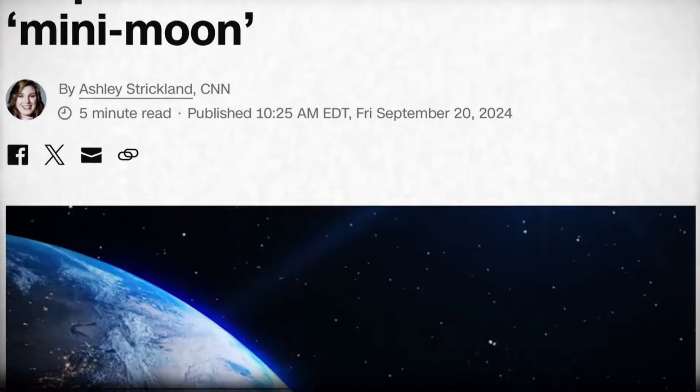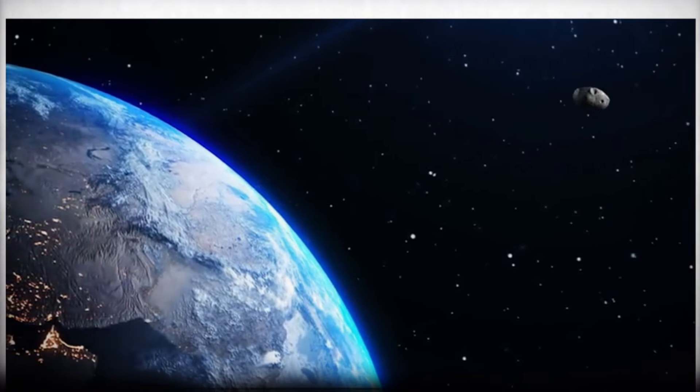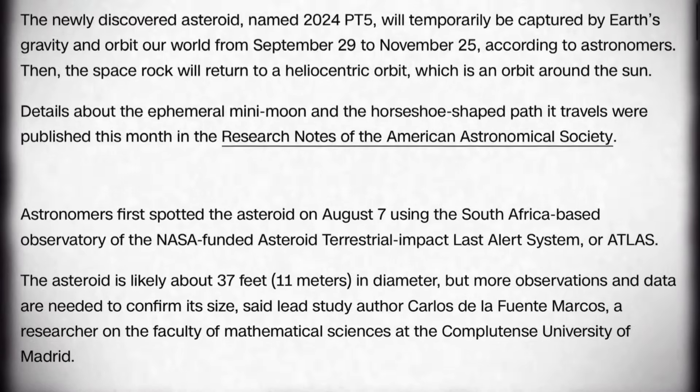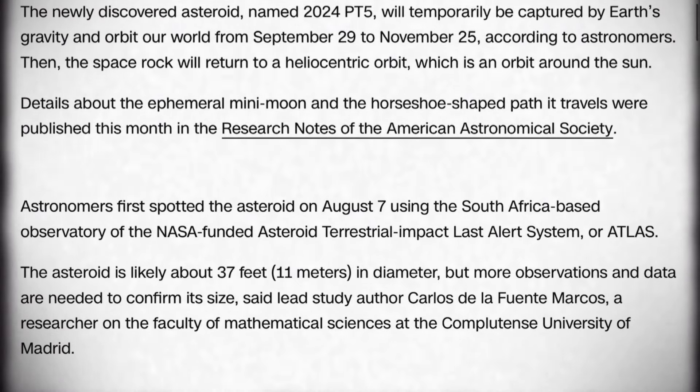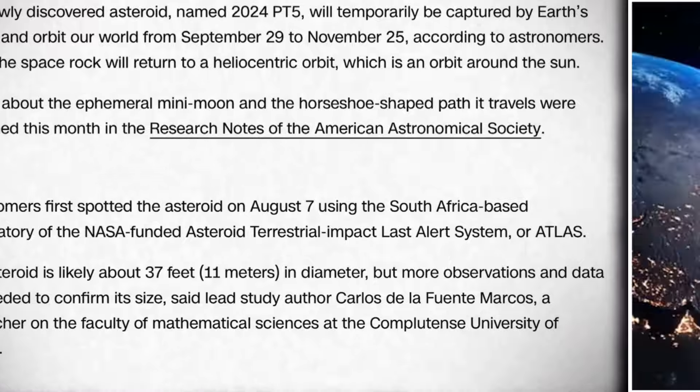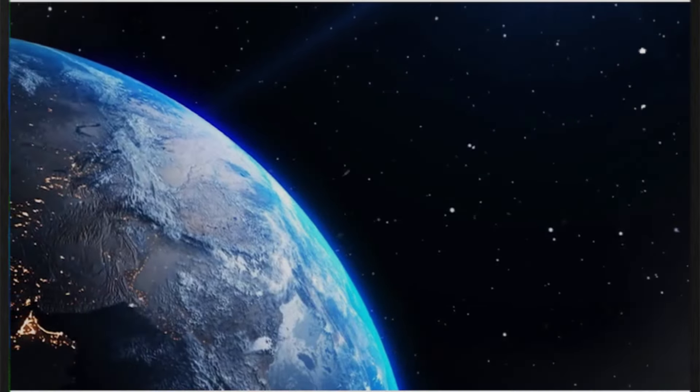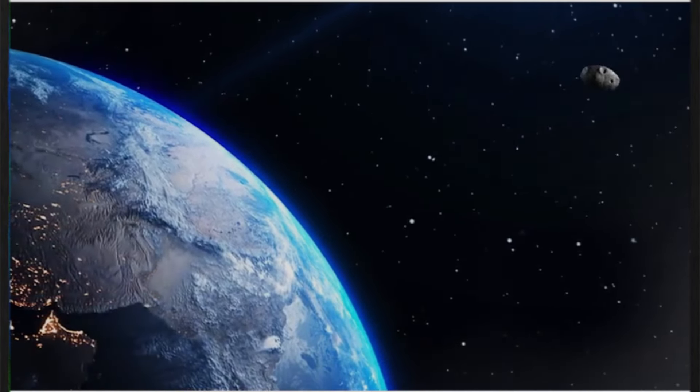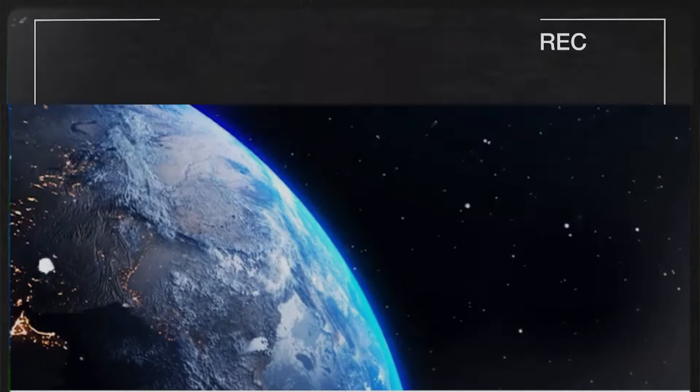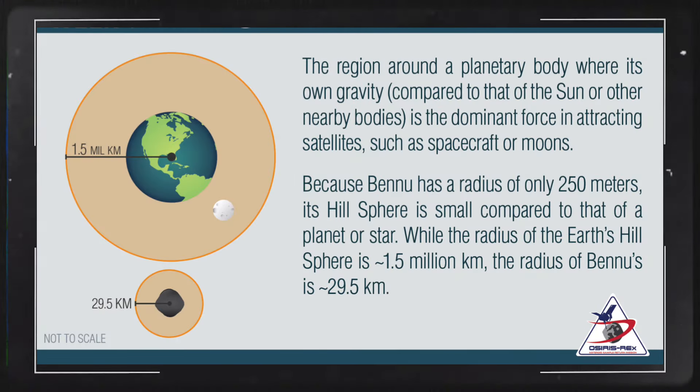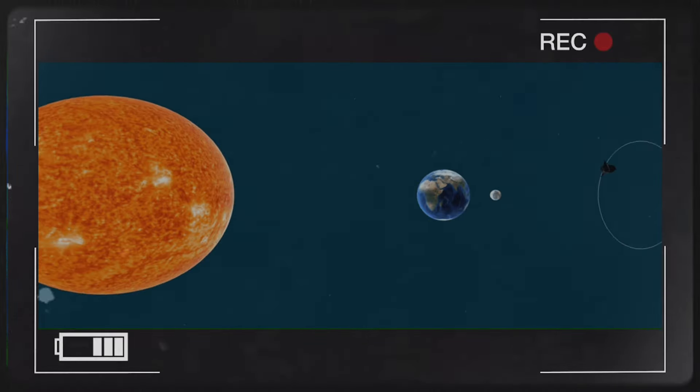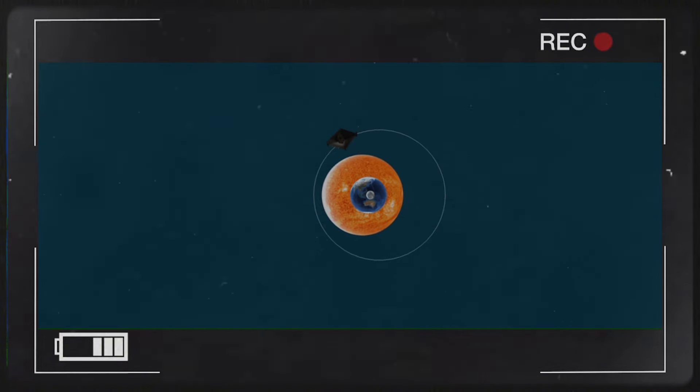Between September 29th and November 25th, asteroid 2024 PT5 is set to embark on a fascinating journey, passing just outside the Hill sphere, which is a region of influence surrounding a celestial body. During this time, it will be approximately 1.5 million kilometers from Earth, allowing it to enter the gravitational influence of our planet. The Hill sphere is an essential concept in astronomy. It defines the area around a celestial body where its gravitational force is sufficient to overcome the gravitational pull of a more massive body that it orbits, such as the Sun. This phenomenon provides a glimpse into the complex interactions between various celestial objects and how they influence one another.